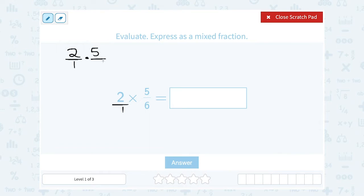Your rule when you're multiplying with fractions is to multiply straight across the top or the numerator and straight across the bottom or the denominator. So on the top, 2 times 5 gives me 10. And on the bottom or denominator, 1 times 6 gives me 6.